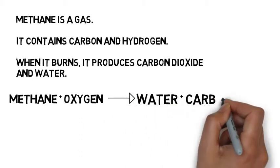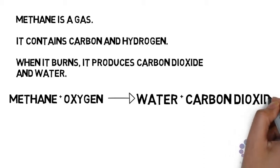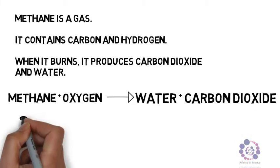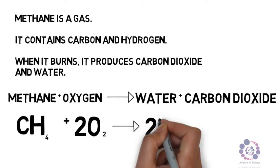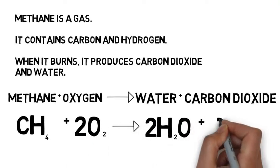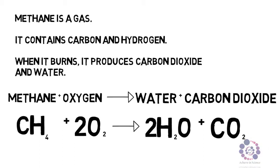This can also be summarized as a symbol equation. Methane has the formula CH4. Oxygen, we would need two moles of this so it's two lots of O2, produces two molecules of water and two molecules of carbon dioxide.